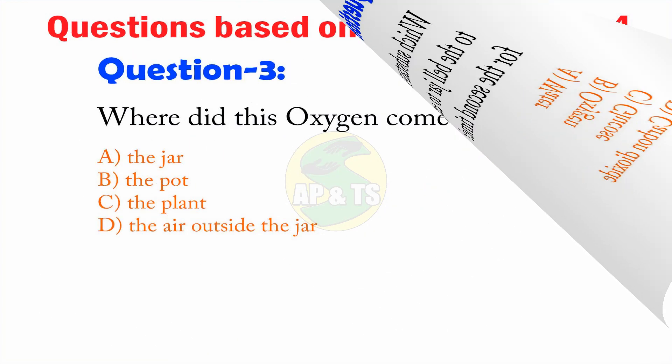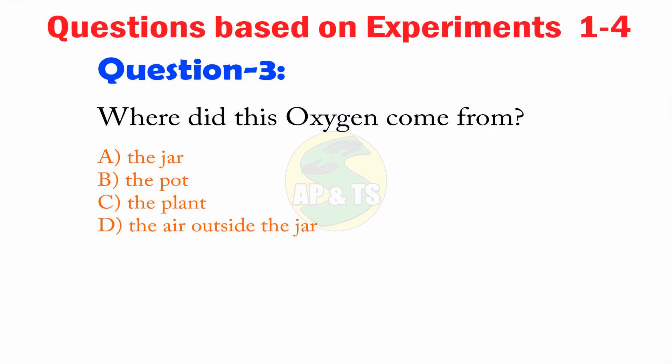Question 3: Where did this oxygen come from? A — The jar, B — The pot, C — The plant, D — The air outside the jar. What is your answer?